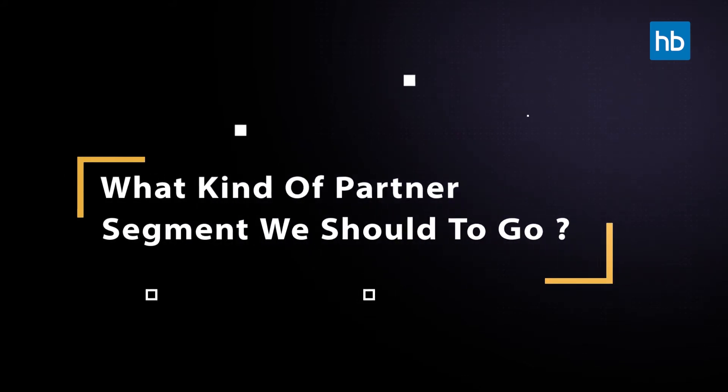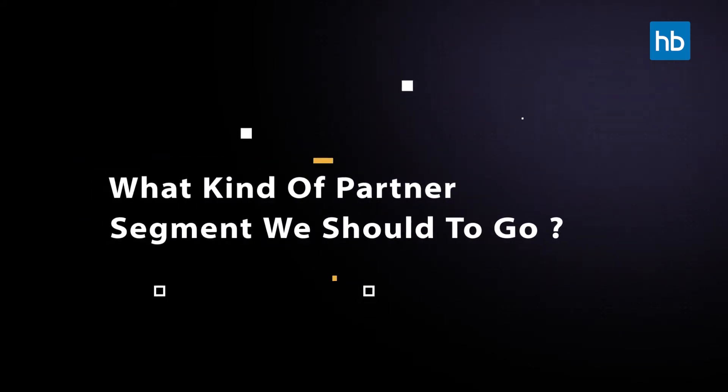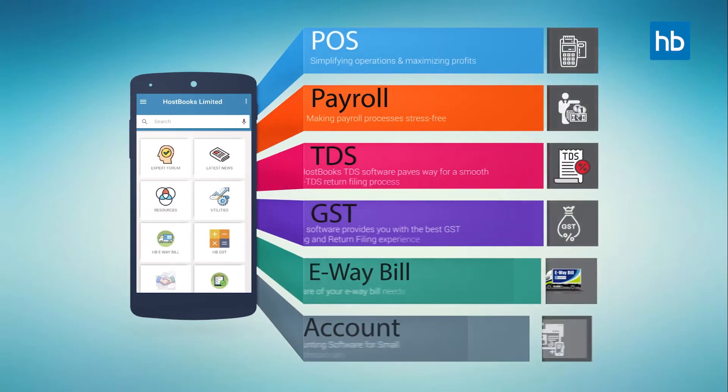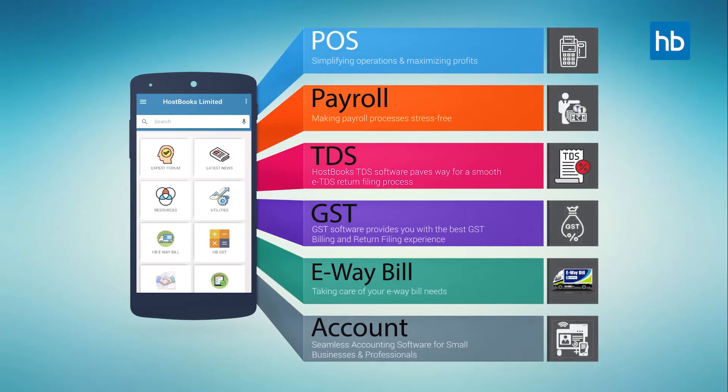We identified a few cities in India and divided those cities into A, B, and C categories. The next question was how do we go to a partner segment? So we identified a few software vendors for HostBooks. When the partner policy starts, we identify partners who add HostBooks' range and suite of applications to their product line.